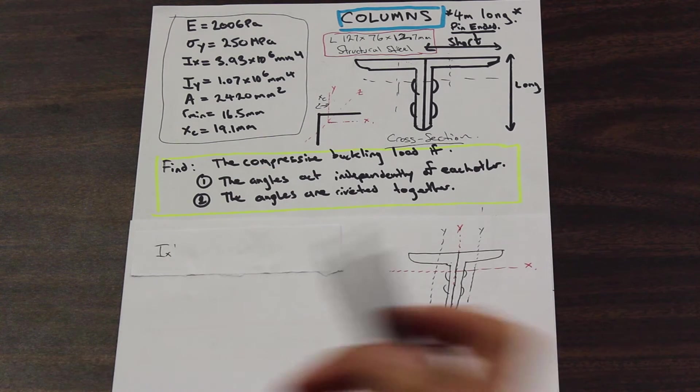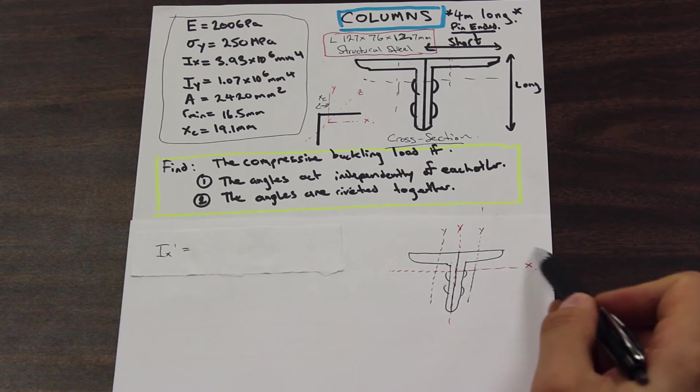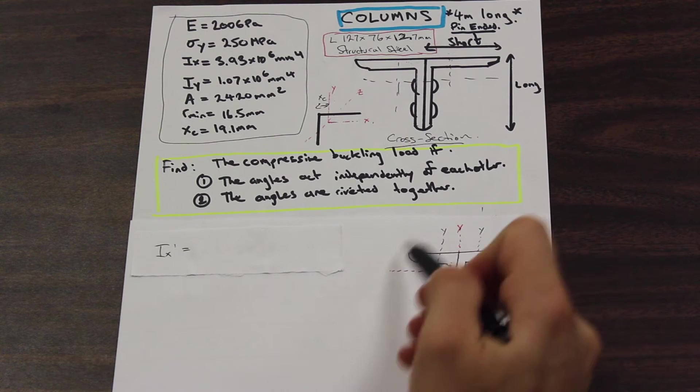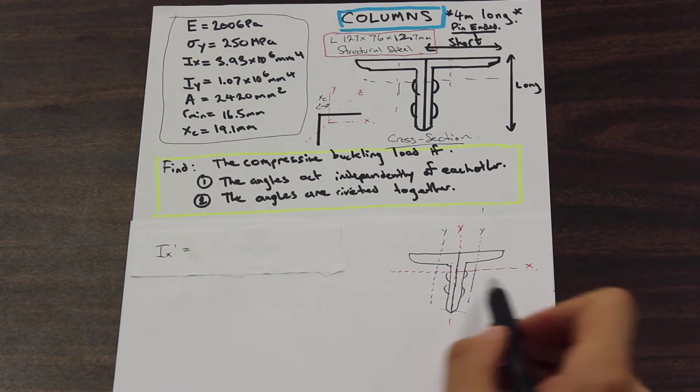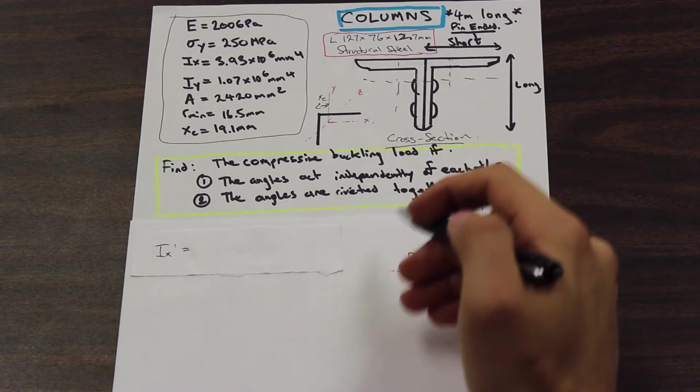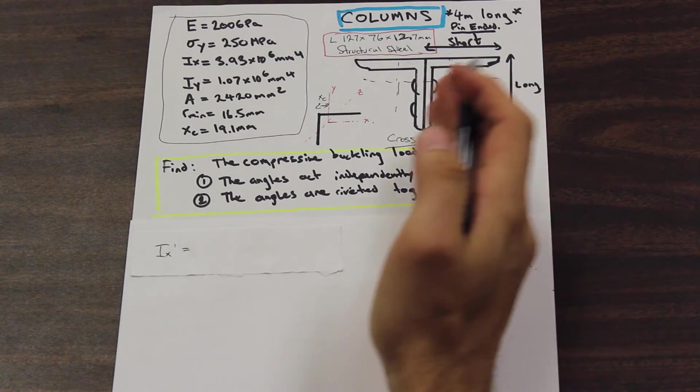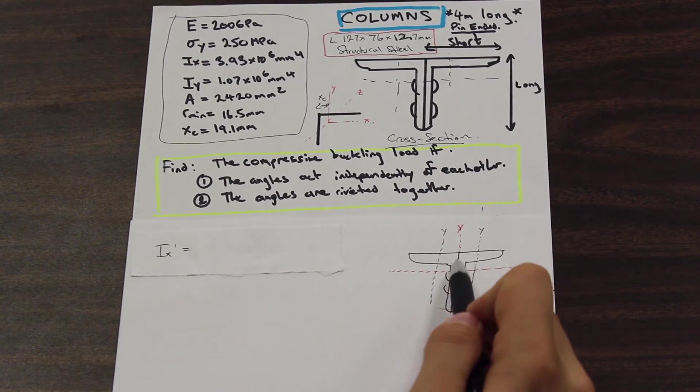With that in mind, let's try and find I_x prime, the global x moment of inertia of our entire cross-section when these two are fastened together. Because they both pass through the moment of inertia still, we haven't displaced it vertically, only horizontally in the y-axis. So there's going to be no parallel axis theorem here.